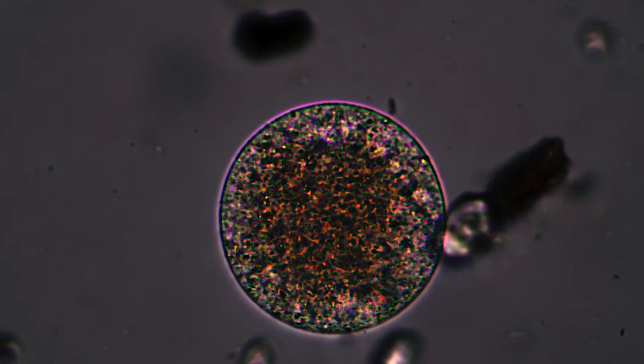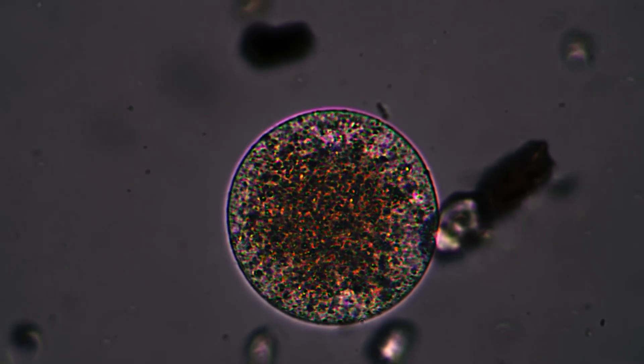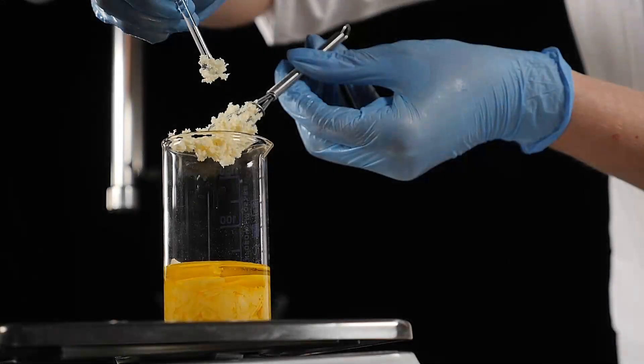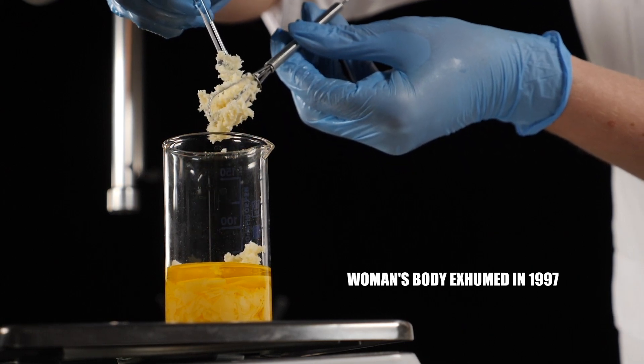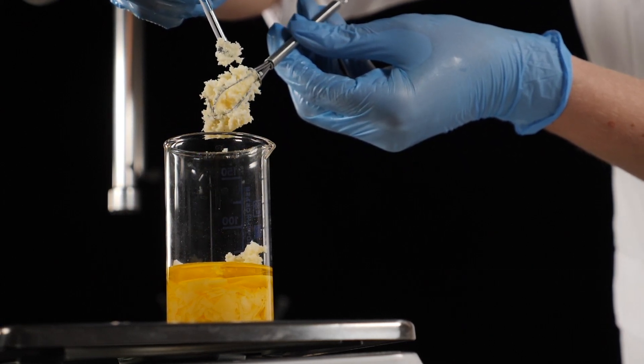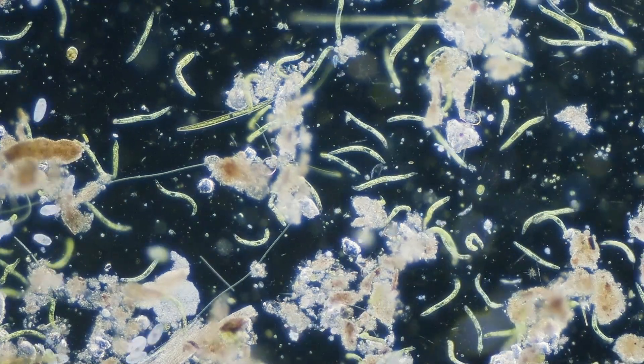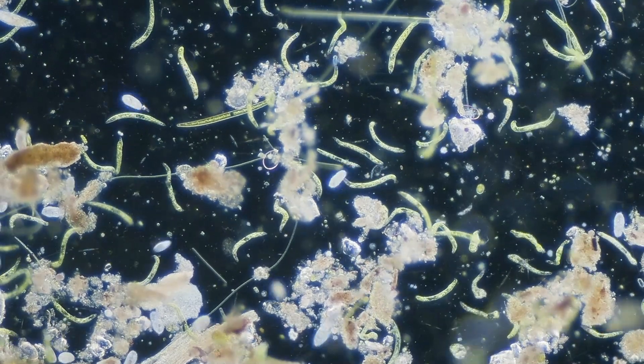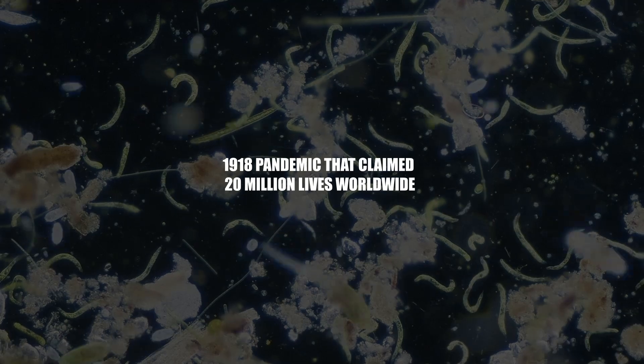But in permafrost, not only ancient viruses reside, many more come from relatively recent epochs. For instance, a lung sample taken from a woman's body exhumed in 1997 from permafrost in a village on the Seward Peninsula, Alaska, contained genomic material of the influenza strain responsible for the terrifying 1918 pandemic that claimed 20 million lives worldwide.